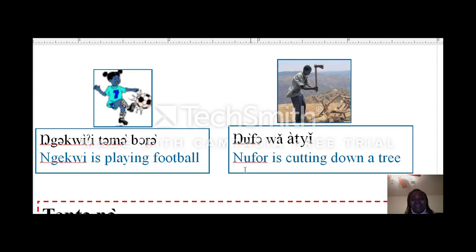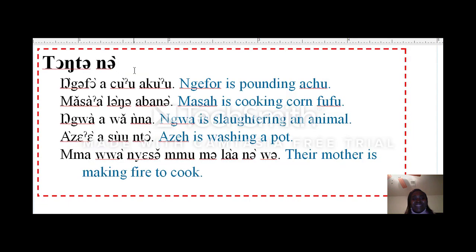Gekwe is cutting down a tree. Gekwe is pounding. Masa is cooking corn fufu. Nguawana is slaughtering an animal. Azee is washing a pot.